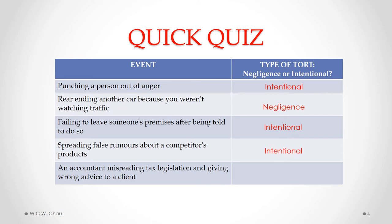The last event is an accountant misreading tax legislation and giving wrong advice to a client. That would be negligence. The accountant accidentally misread the tax legislation — the accountant did not intentionally give wrong advice. So that is considered to be a tort of negligence.